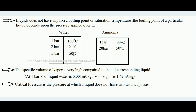The second thing to keep in mind is that the specific volume of vapor is very high compared to that of the corresponding liquid. For example, at one bar pressure, liquid water's specific volume is 0.001 m³/kg, meaning 1 kg of liquid water occupies 0.001 m³. But when the same water converts into vapor at one bar, the specific volume becomes 1.69 m³/kg — about 1600 times more than liquid water.